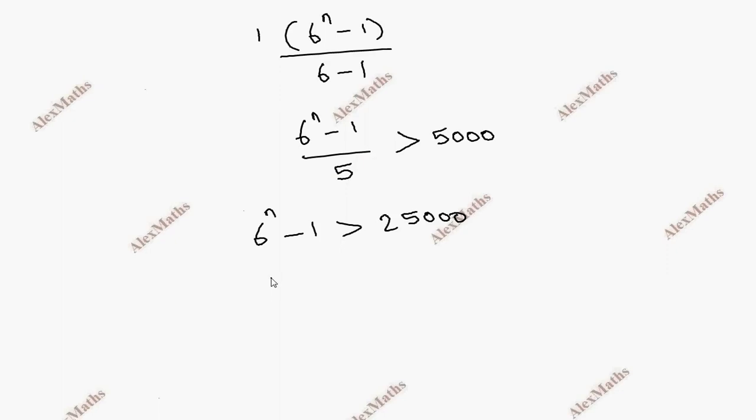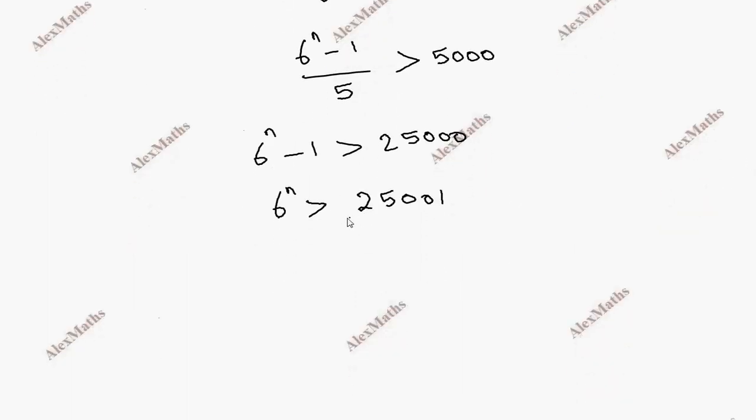So if we cross multiply, 6 power n minus 1 greater than 25000. So 6 power n greater than 25001. Now we'll compare 6 powers. 6 power 1 is 6.